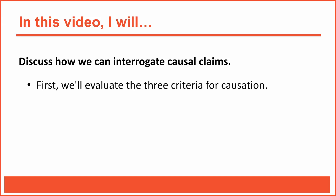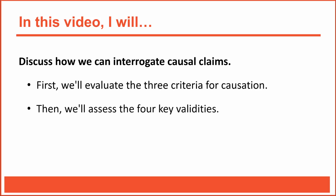After reviewing an interesting causal claim, we'll see if the research backing up that claim meets the three criteria for causation. And then we'll assess the author's conclusions based on the four key validities. All right, let's get to work.